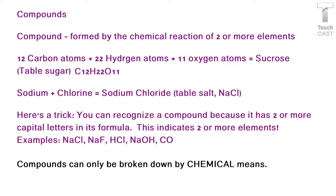Now let's talk about compounds. A compound is when two or more elements chemically react and form together and bond. So if we have 12 carbon atoms and 22 hydrogen atoms and 11 oxygen atoms, we get sucrose, which you know as table sugar. Another example is sodium plus chlorine, which makes sodium chloride — which we talked about last week — and that makes table salt.